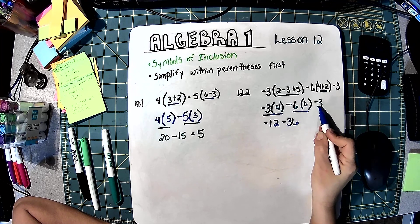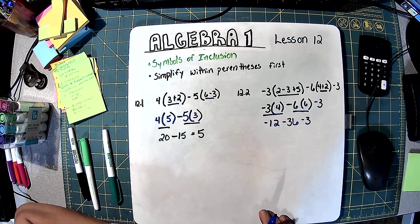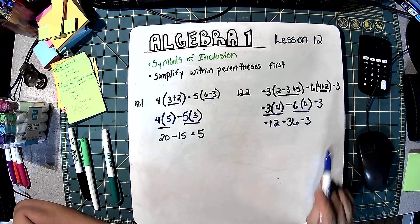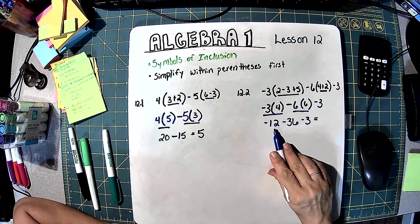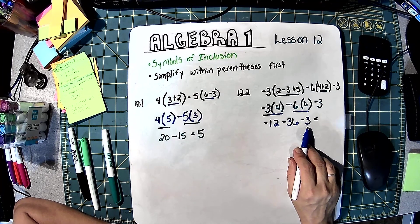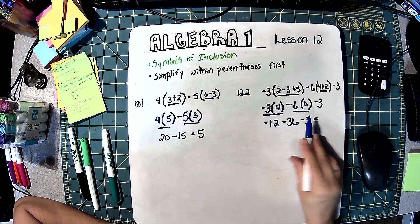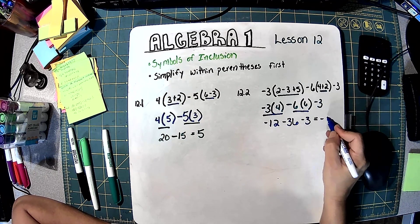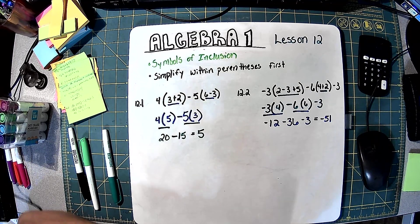This negative 3 isn't being multiplied by anybody, so we just bring it down. These are all negative, so we can just add them up and we're going to have a negative answer. I owe $12 and $36 and 3 more dollars — that would be 48, 49, 50, 51. Negative 51.